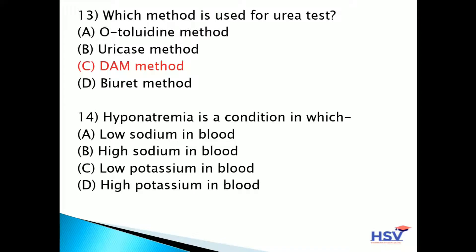Fourteenth question: hyponatremia is the condition in which? Option A: low sodium in blood. Option B: high sodium in blood. Option C: low potassium in blood. Option D: high potassium in blood. The answer is option A — low sodium in blood. Hypo means low, and natremia refers to sodium, so hyponatremia means low sodium in blood. Hyper means high.